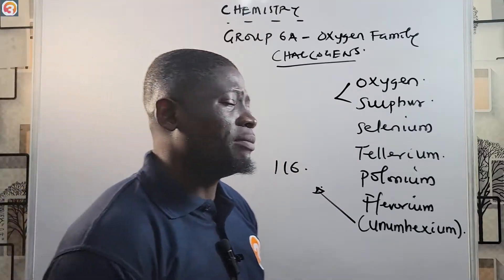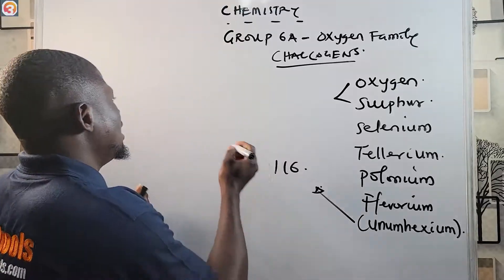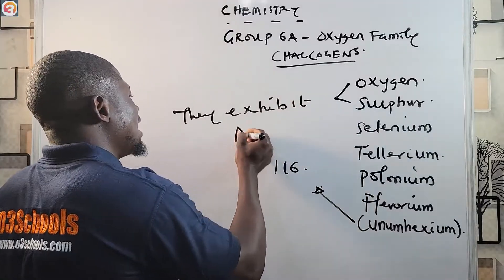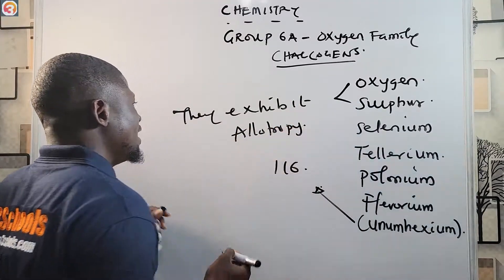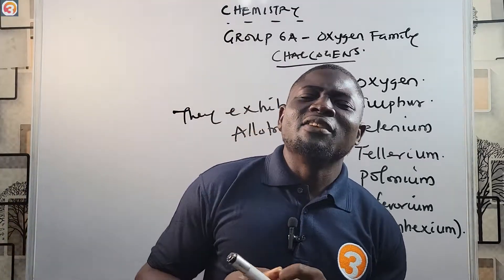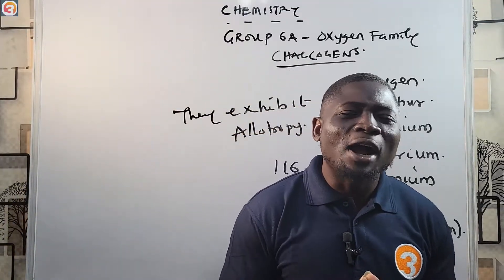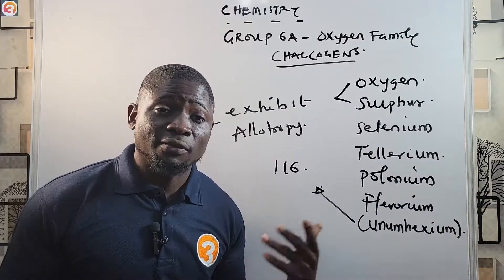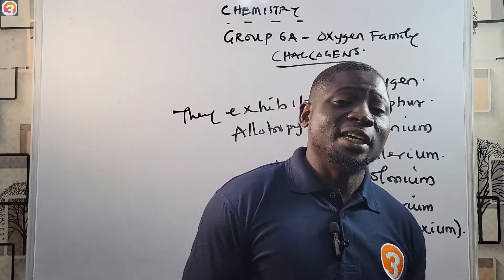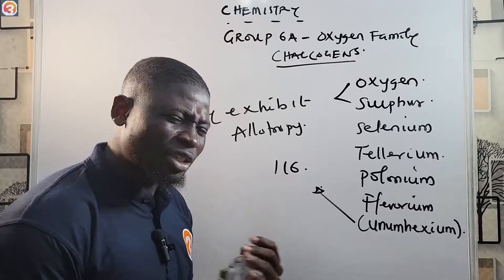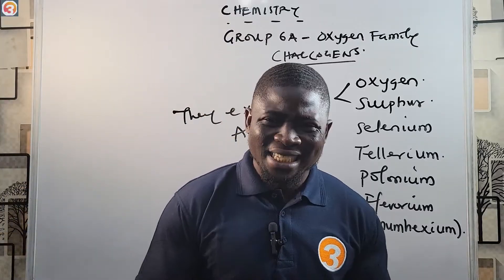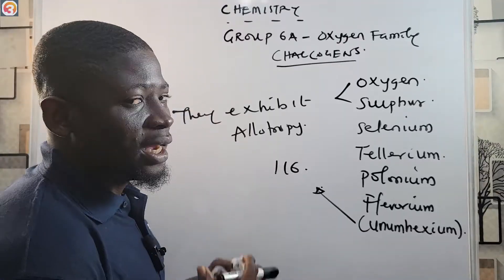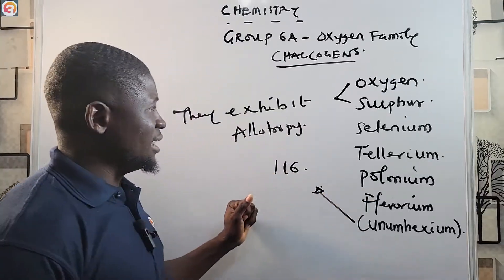Oxygen and sulfur, the most important members of this group, both exhibit allotropy. There is a full video on this channel dedicated to allotropy, so I'm not going to cover it in detail here. Allotropy is the existence of different forms of a substance in the same physical state. If you want to know more, please go and watch our video on allotropy.